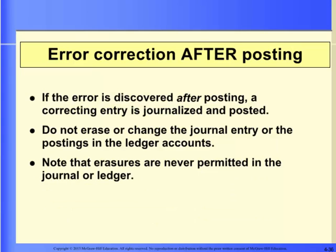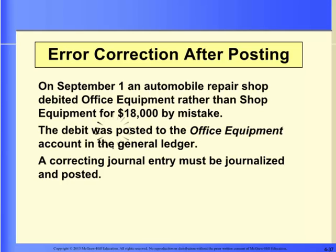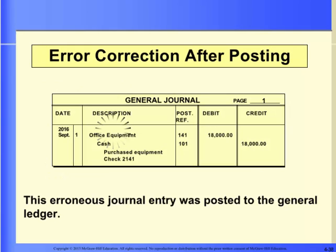What if the error is discovered after posting? It is important never to erase in the journal or the ledger. If the error is discovered after being posted to the general ledger, then a correcting journal entry must be journalized and posted. A correcting entry is a journal entry made to correct an erroneous entry. For example, if office equipment was debited instead of shop equipment, a correcting journal entry must be made to fix the error.